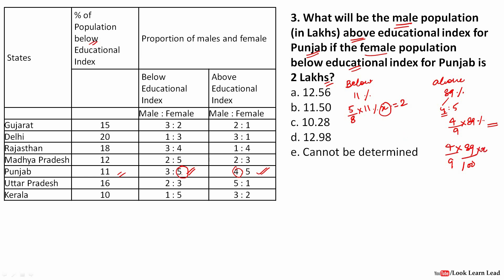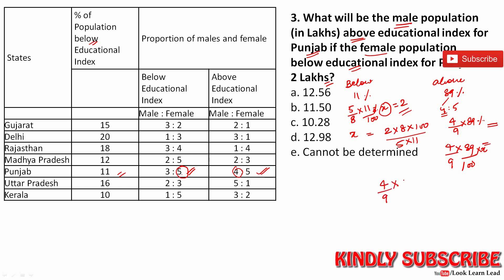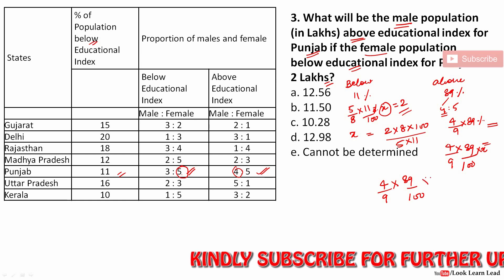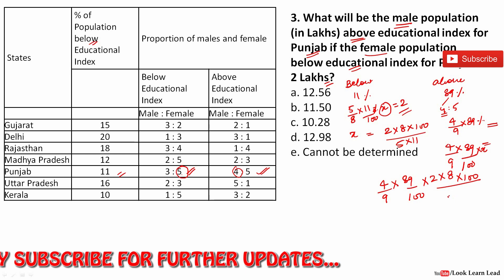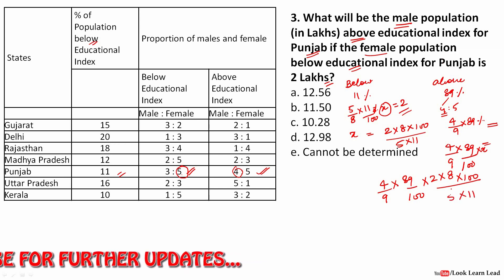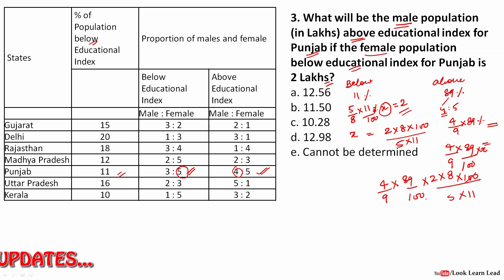We want 4/9 × 89% × x. From the second condition: x = 2 × 8 × 100 / (5 × 11). Substituting: 4/9 × 89/100 × (2 × 8 × 100)/(5 × 11). The 100s cancel out.